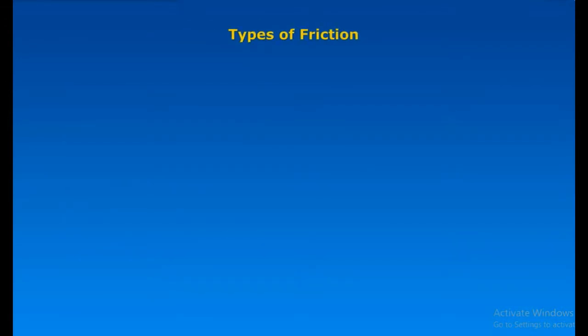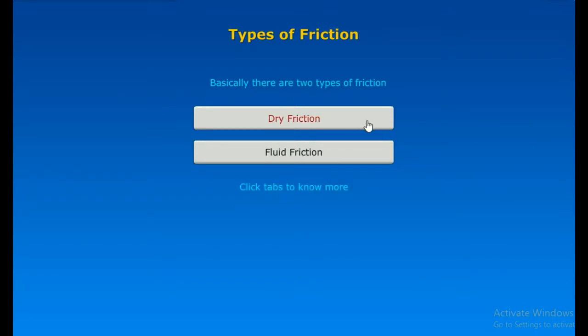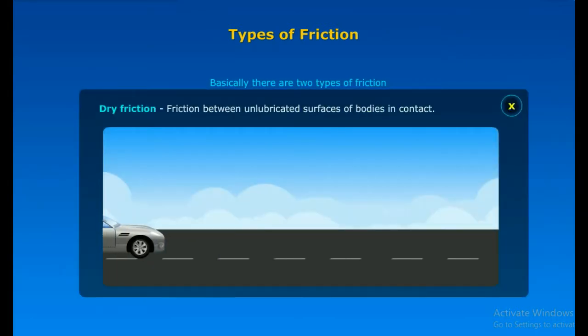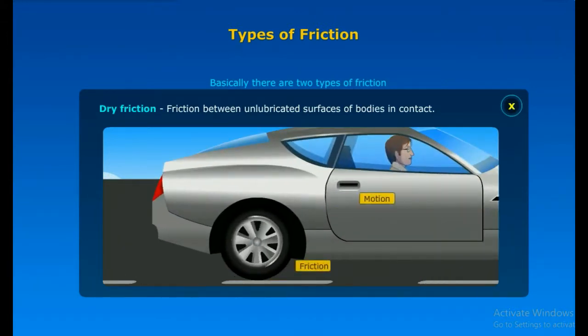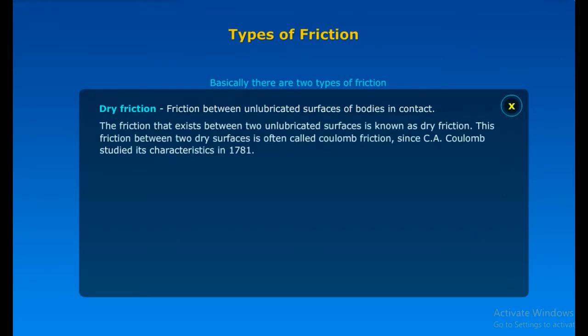Let us discuss the various types of friction. Basically, friction is of two types. They are dry friction and fluid friction. Dry friction is a friction between unlubricated surfaces of bodies in contact. The friction that exists between two unlubricated surfaces is known as dry friction. This friction between two dry surfaces is often called Coulomb friction since C.A. Coulomb studied its characteristics in 1781. There are two types of dry frictions which are as follows.